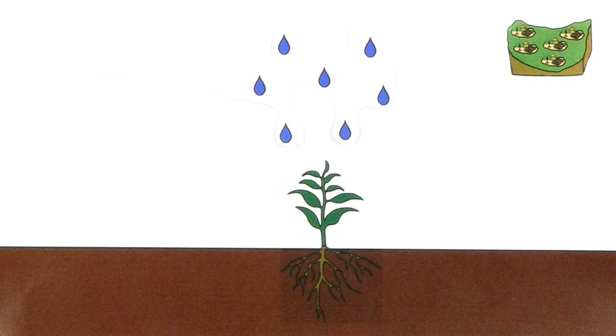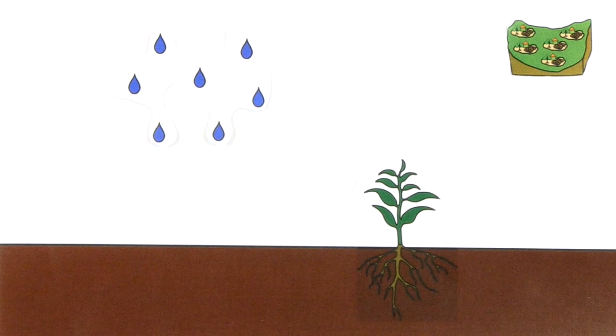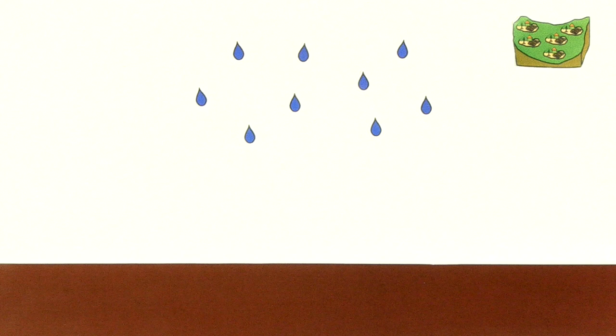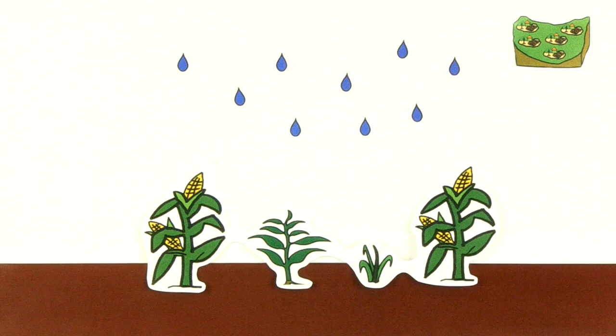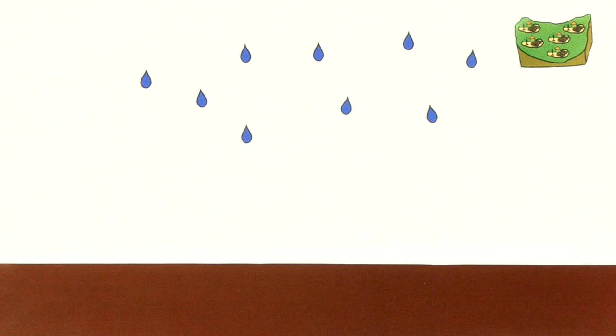In macro-catchment rainwater harvesting, the catchment area lies outside the application area. This means the rain is not collected where it is used. The land cover of the catchment area can be manifold, including cultivated land, roads or settlements. Often the catchment area is located on a hill or mountain slope.